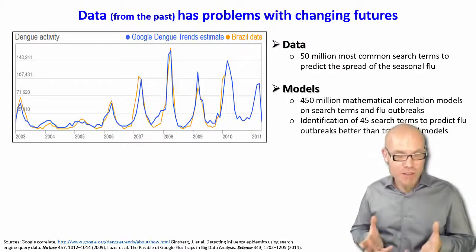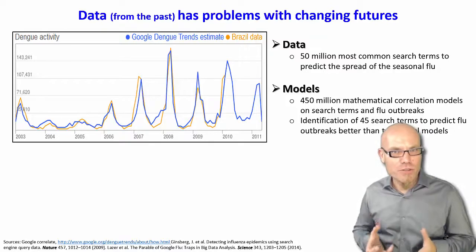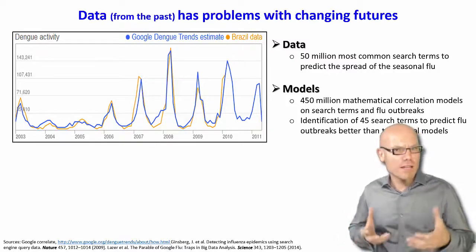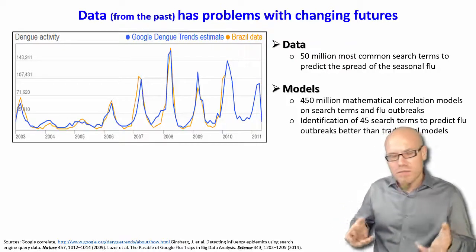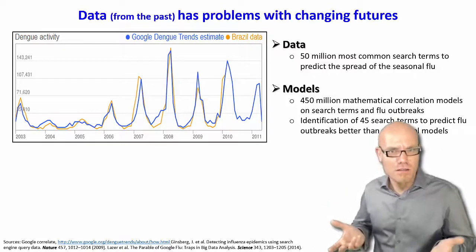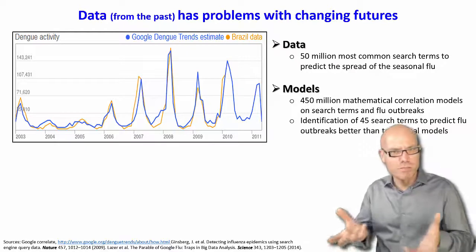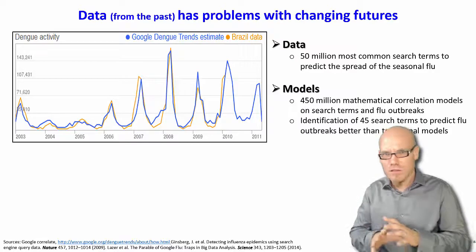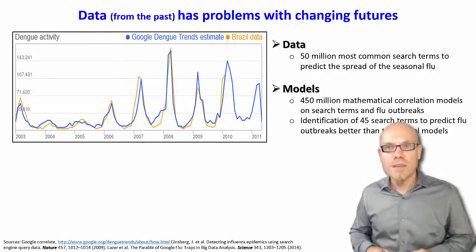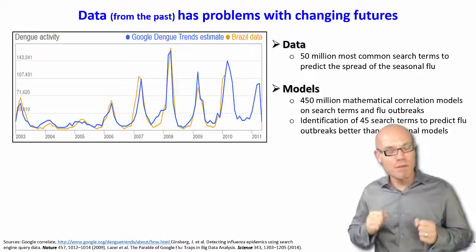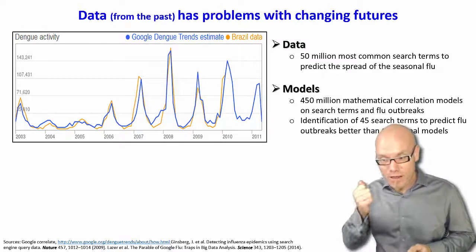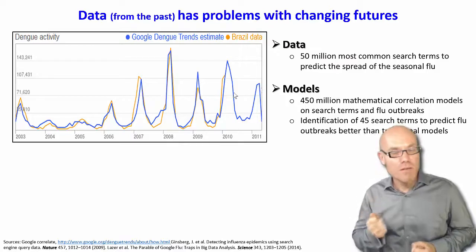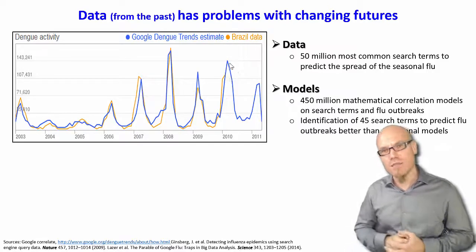It turned out all 45 search terms had something to do with the flu — things like stomach ache and headache. But in theory it could have been something like 'orange car' — as long as it was a good predictor, they would have used it; there was no theory involved. This was very exciting because it helped track flu outbreaks in real time and make predictions where official data was not yet available.